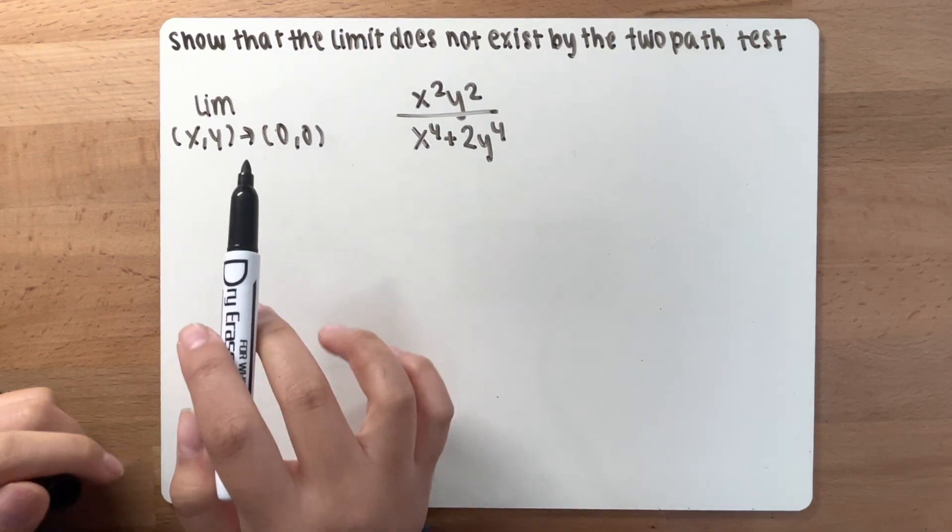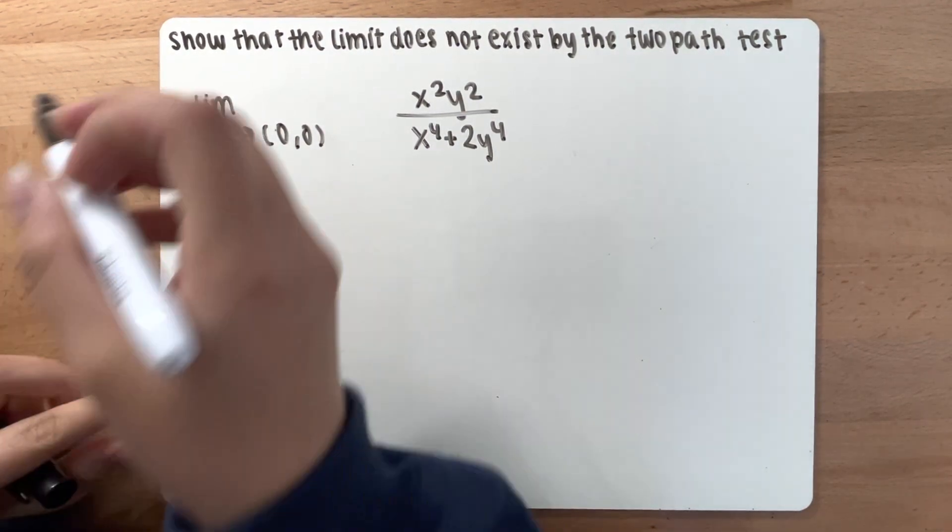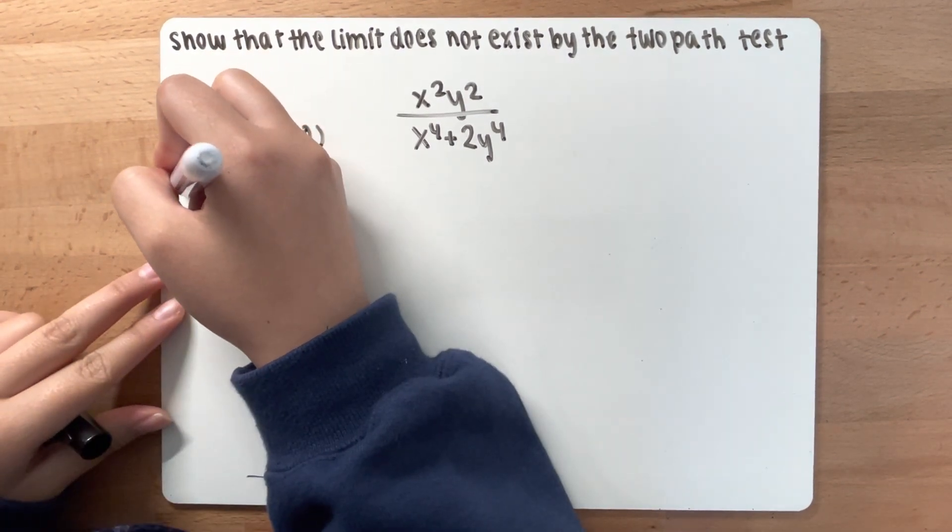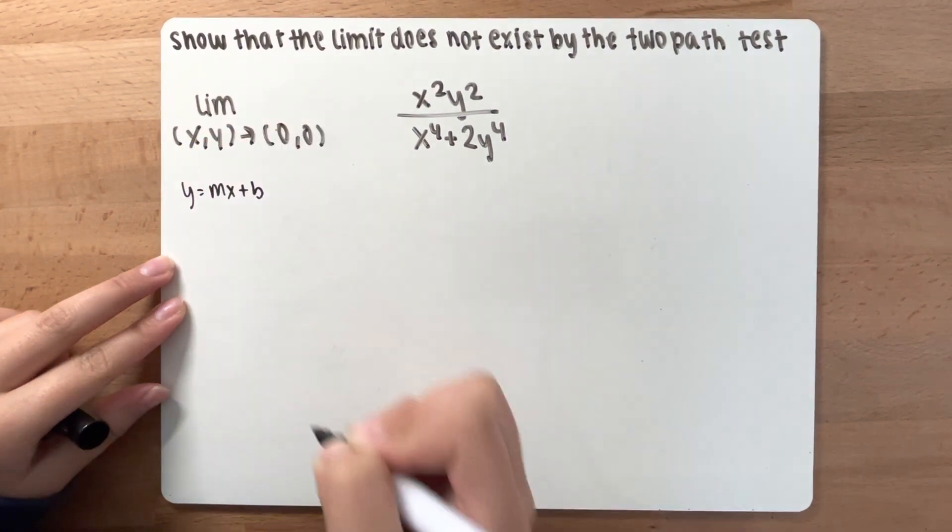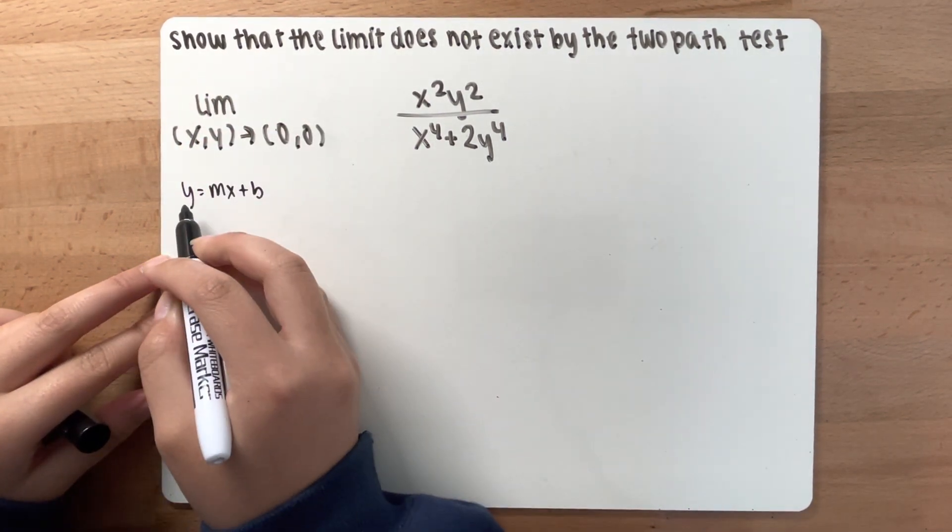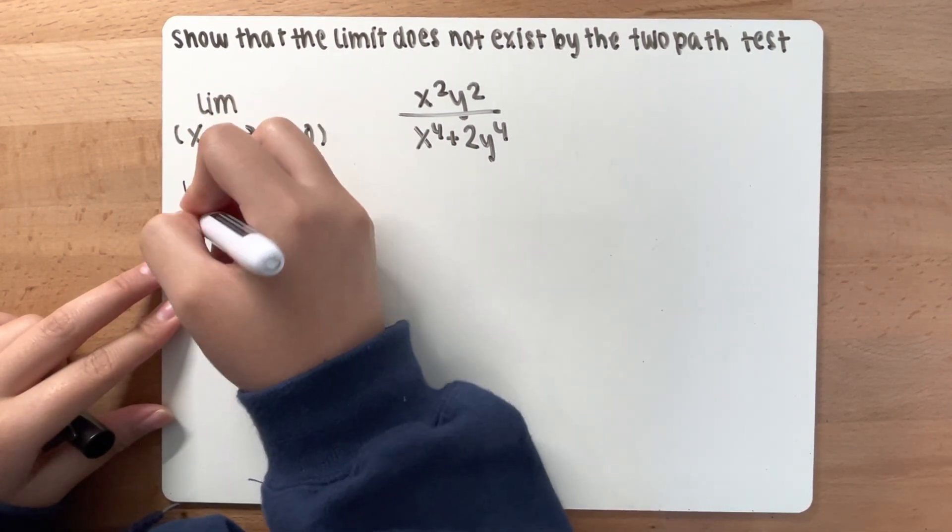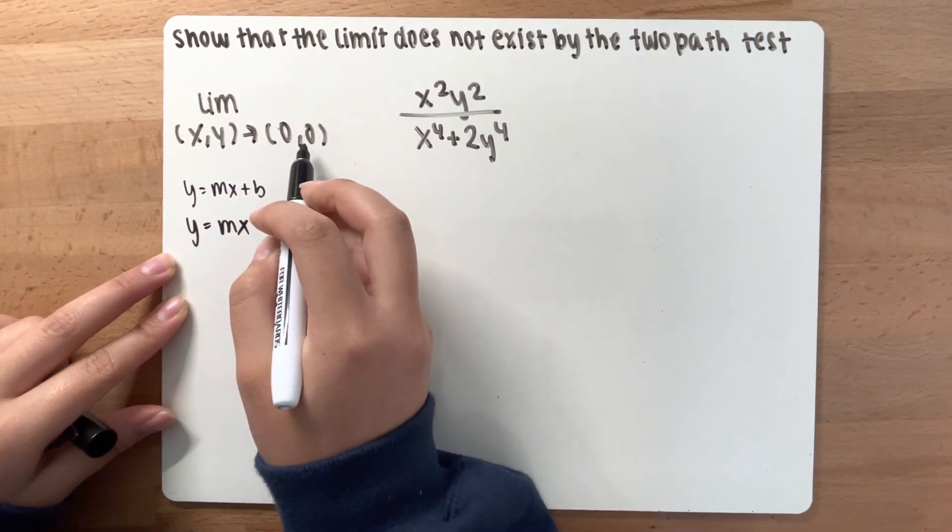To start off, since both of these values are zeros, if you think back to the equation y equals mx plus b, b is going to be zero. Therefore, y is equal to mx, because the intercept is zero.